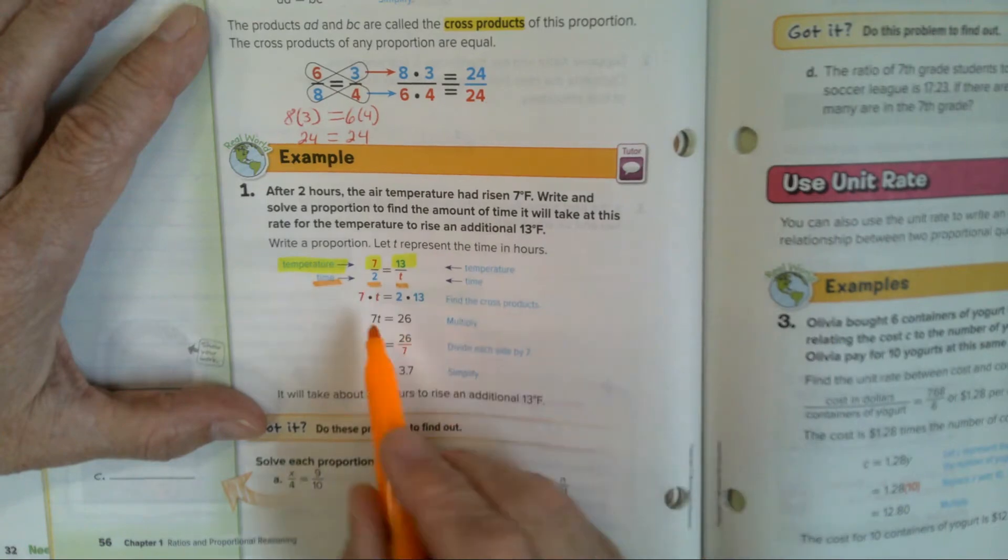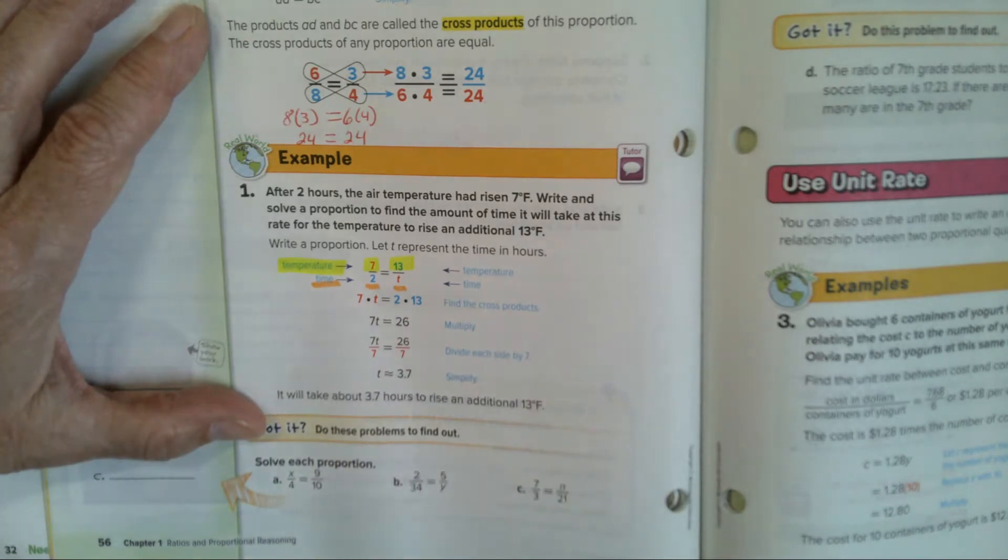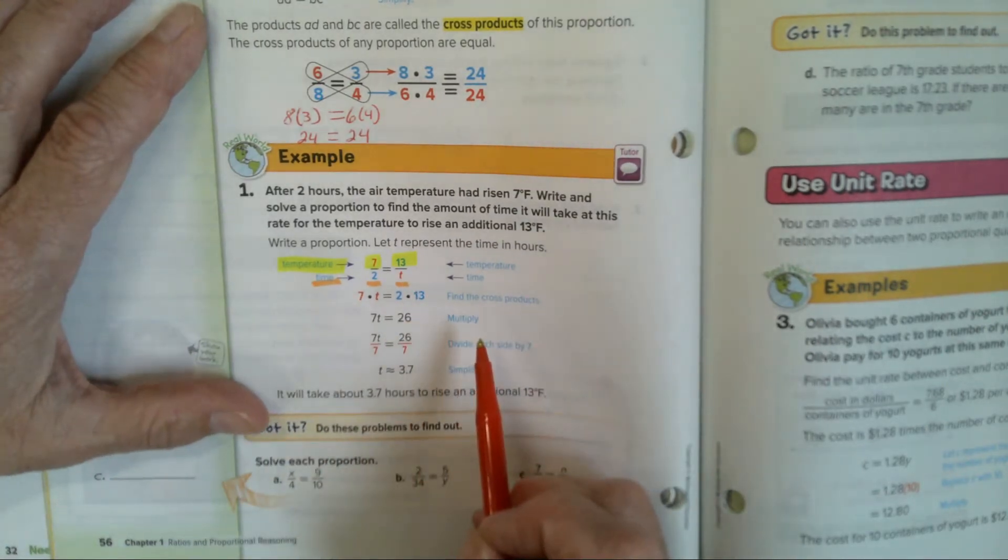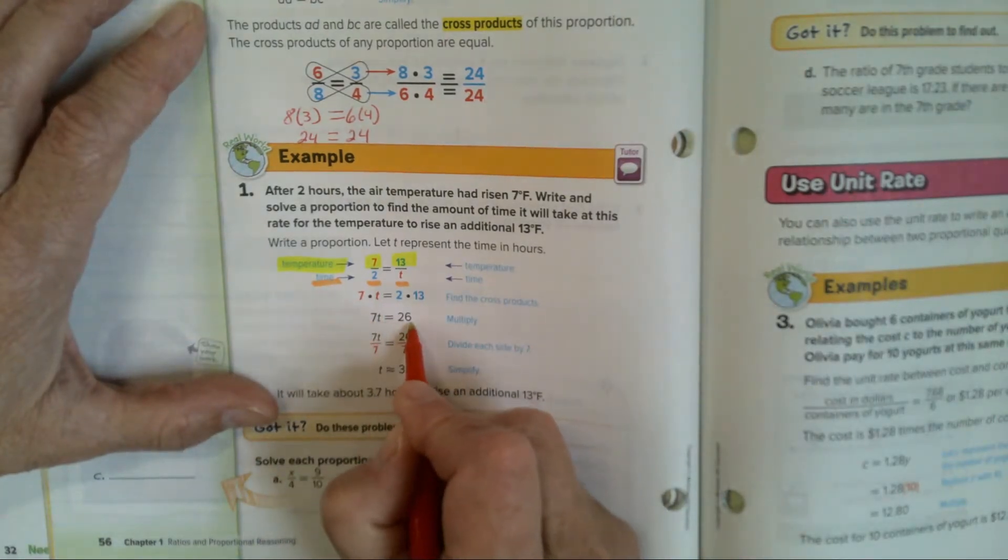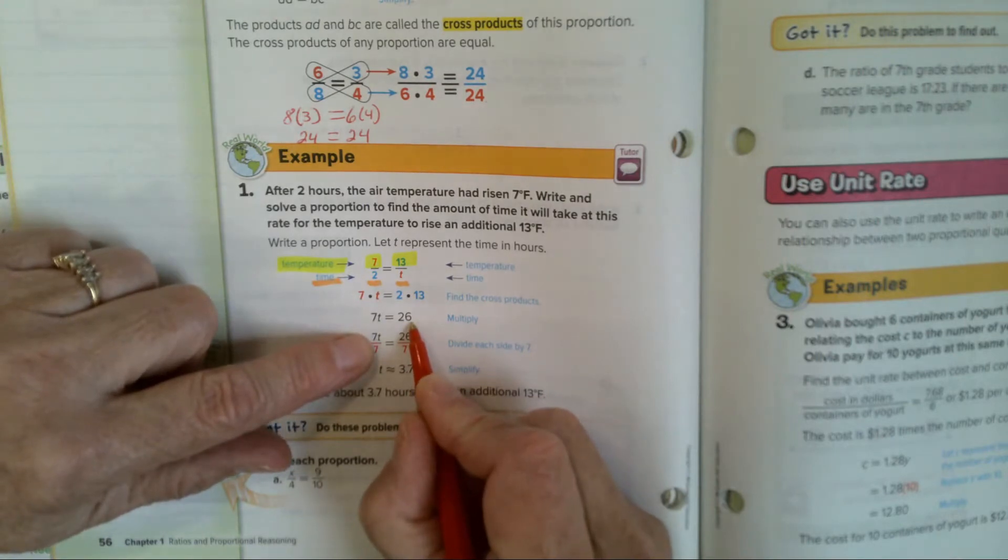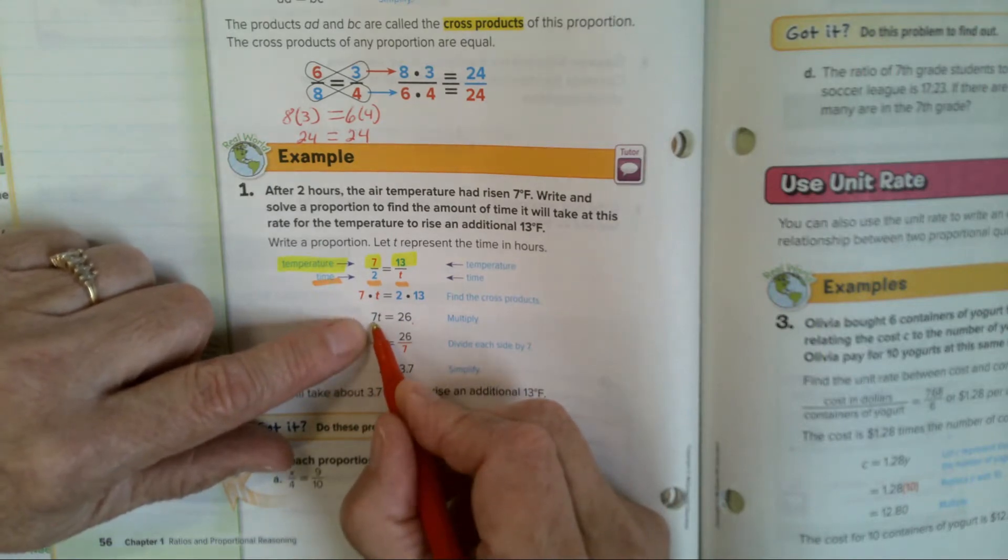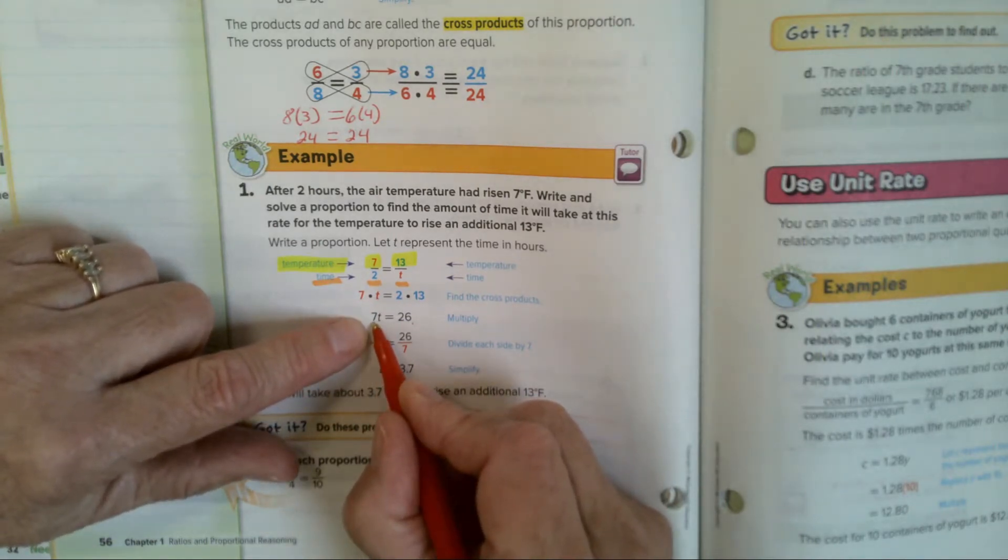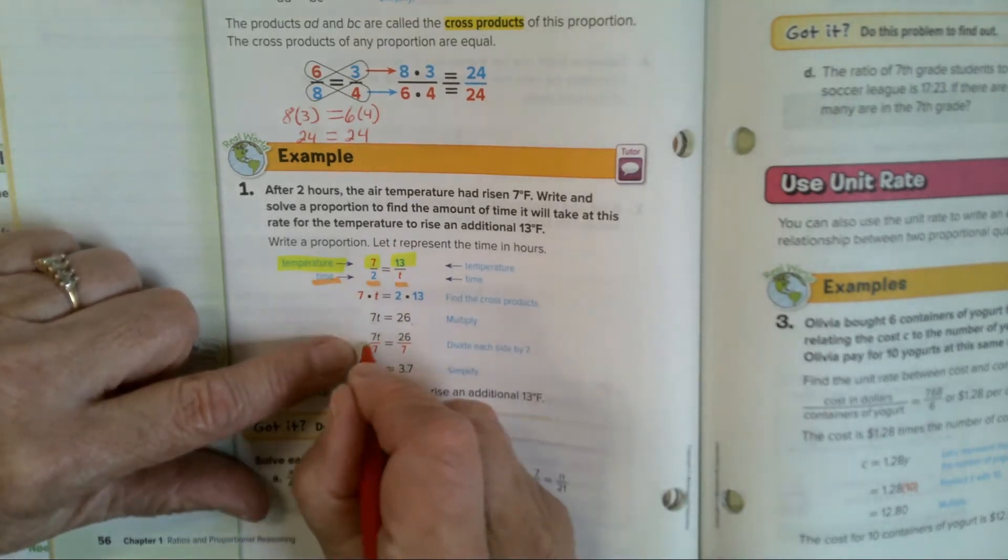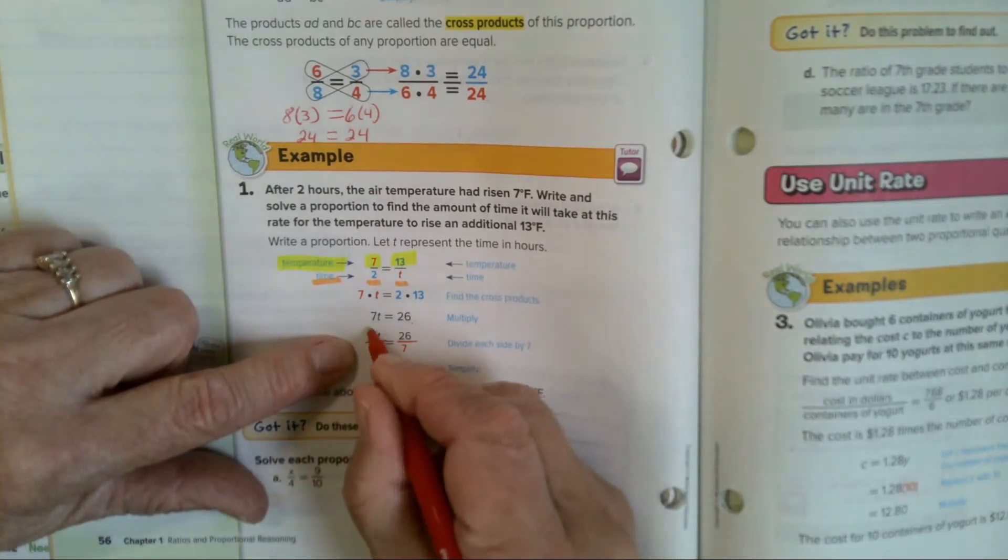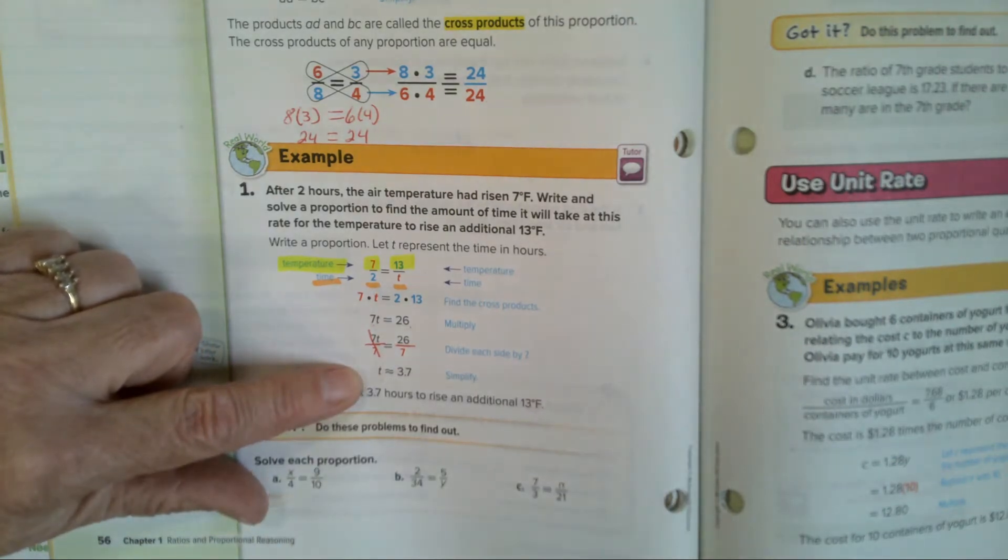Then you do the cross products. 7 times T equals 2 times 13. Do you see that cross product? Then you solve your equation. You end up with 7 times T equals 26. Do you see how they got the 26? 2 times 13 is 26. You write it as an algebra student like this. Then it's solve the equation. What will undo multiplying by 7? Dividing. And how do you show it in algebra? With the bar. And you end up with T equals 3.7.